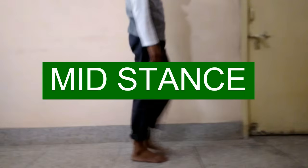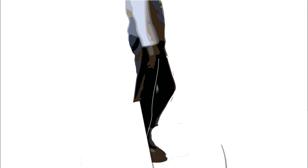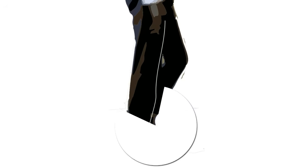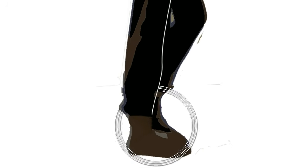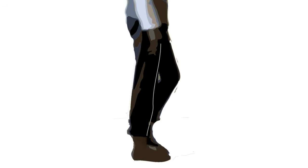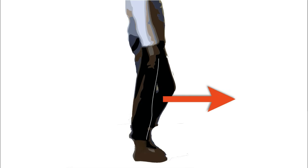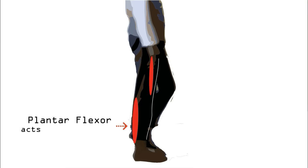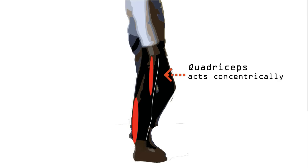Next comes the mid stance phase. It is the midway of the whole stance phase. Due to activity in the intrinsic foot muscles, the foot converts into a rigid structure over which the leg moves. In order to control the rate at which the leg moves over the ankle, the plantar flexors contract eccentrically. The quadriceps act concentrically to initiate knee extension.